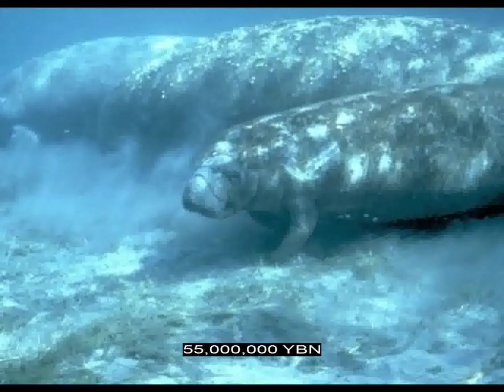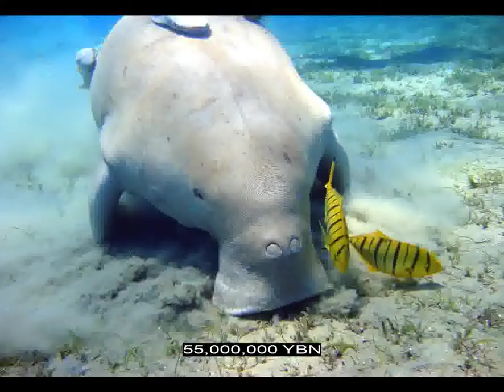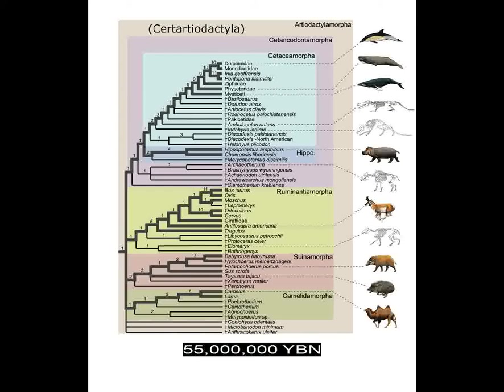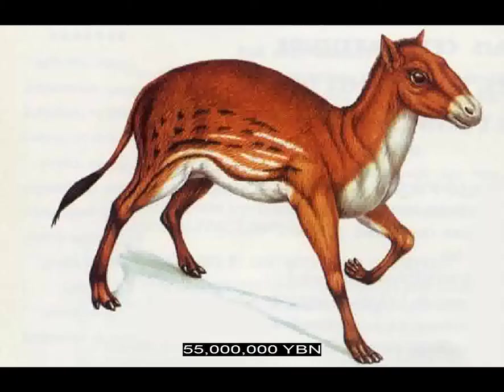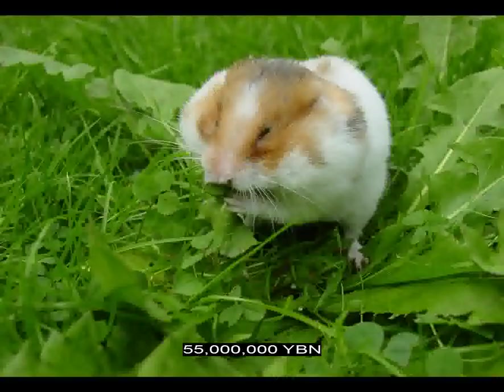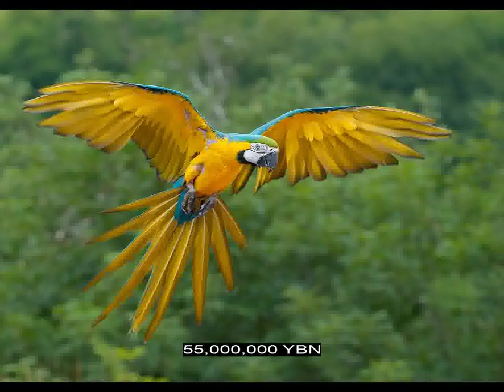Afrotheria elephants. Afrotheria manatee and dugong. Laurasiatheria Cetartiodactyla evolve — ancestor of all Artiodactyla, also called even-toed ungulates: camels, pigs, ruminants including deer, giraffe, cattle, sheep, and antelope; hippos and all Cetacea — whales and dolphins. Laurasiatheria Perissodactyla evolve — also called odd-toed ungulates: horses, tapirs, rhinos. Rodents Rodentia. Rodents Myomorpha — rats, mice, gerbils, voles, lemmings, hamsters. Birds Psittaciformes — parrots. Horses evolve. Last common ancestor between hippos with dolphins and whales.